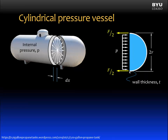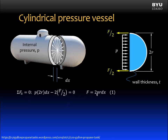The walls of the pressure vessel are resisting that pressure with a force, and each wall — top and bottom — takes half the force. If we sum forces in the x direction, we take our pressure and multiply it by an area: the height 2r times the width of the ring, dx. We subtract off the two wall forces and set that equal to zero. Solving for the force gives F = 2 × P × r × dx. We'll call that Equation 1. The area of the pressure vessel wall along this cut has two sections, each with thickness t and width dx, so the total area is 2 × t × dx. We'll call that Equation 2.